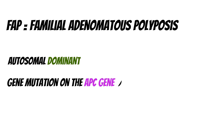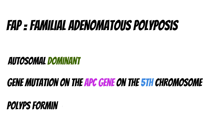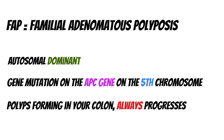One important genetic disorder that predisposes individuals to CRC is Familial Adenomatous Polyposis, or FAP. It is an autosomal dominant condition, meaning only one allele from a parent needs to be passed down for you to develop it. It is caused by a mutation on the APC gene on chromosome 5. It involves polyps forming throughout the colon and always progresses to CRC, sometimes as early as your 30s or 40s, and it always involves the rectum.